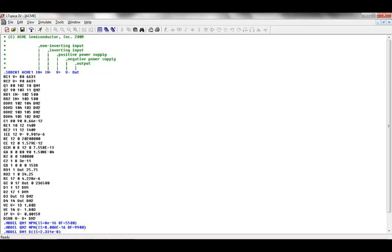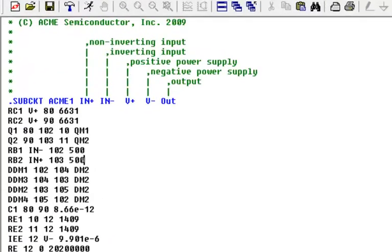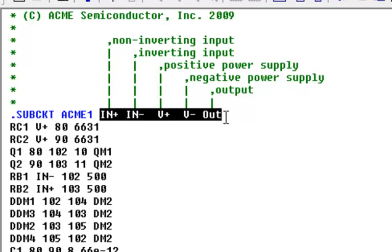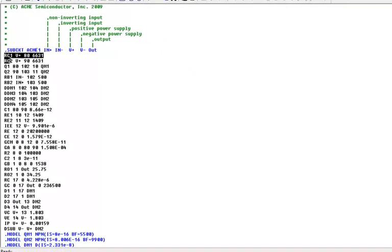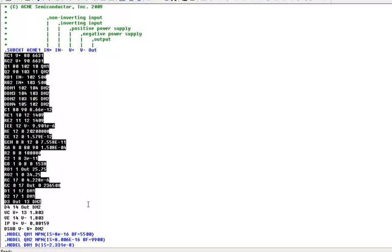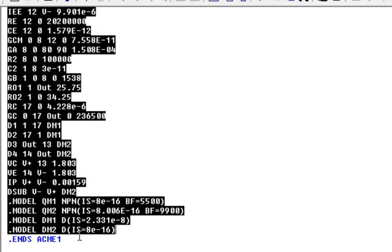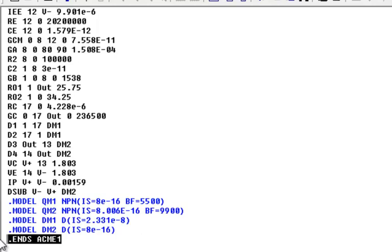Here's an example third-party dot subcircuit statement for an op-amp. You notice that it contains a unique name, associated pins, followed by the definitions of the subcircuit statement to include dot model statements. The end of the dot subcircuit statement must contain a dot end directive.